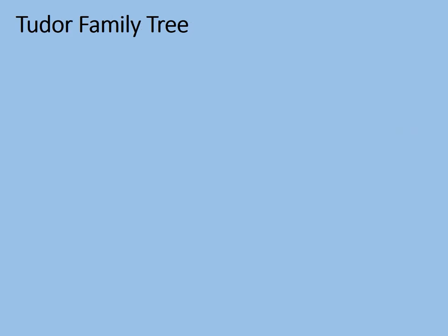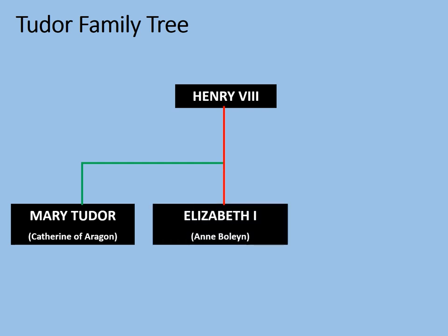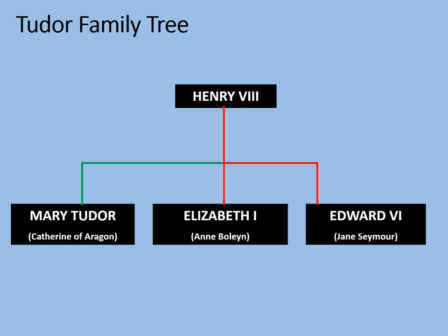We're going to start by looking at why the Spanish Armada happened in the first place, beginning with the Tudor family tree, starting with Henry VIII. Henry VIII had several children. His first child was Mary, daughter of Henry and Catherine of Aragon, his first wife. His next child was Elizabeth, who later became Elizabeth I, daughter of Henry and Anne Boleyn, his second wife. And then his third and final child was Edward VI, son of Henry and his third wife, Jane Seymour.